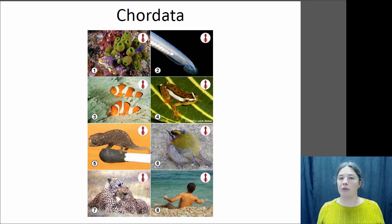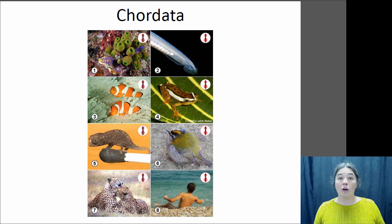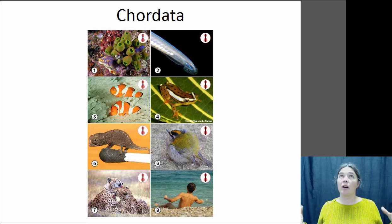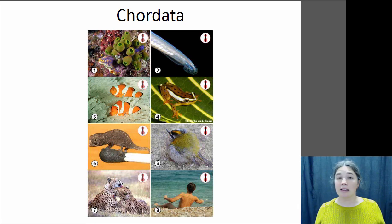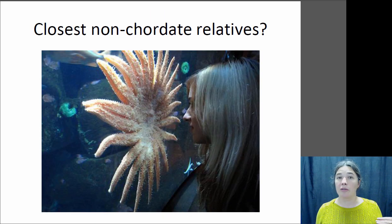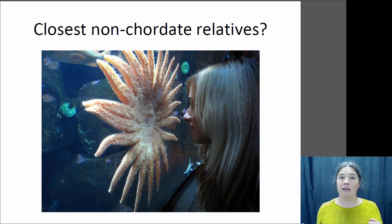We are deuterostomes, we are triploblastic, and we have bilateral symmetry. What's interesting is that if you're trying to identify the most closely related thing on this planet that is not a chordate to us, it's actually the echinoderms — which is kind of crazy. So that sea star is your closest relative outside the chordates. Catch you guys later.